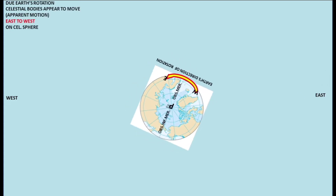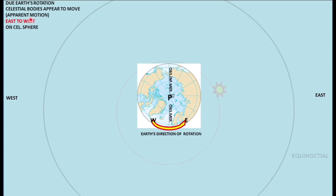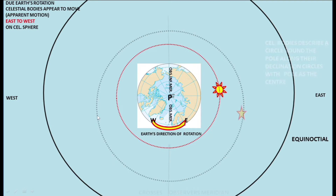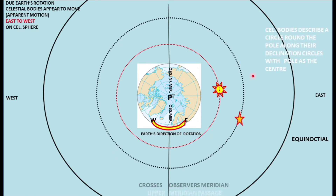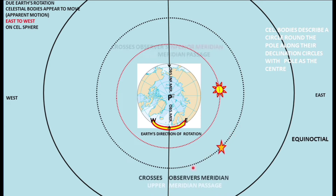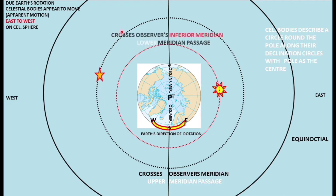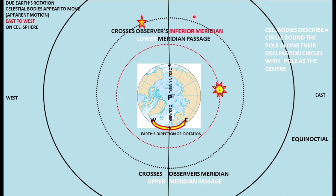The Earth is rotating from east to west, so the apparent motion of all bodies is from east to west. We see that the bodies rise on the east and set on the west. All these bodies are basically moving around on their declination circle, cross the observer's meridian, continue on their path, and cross the observer's inferior meridian. This is the daily passage of the celestial body.